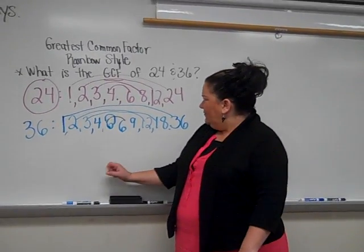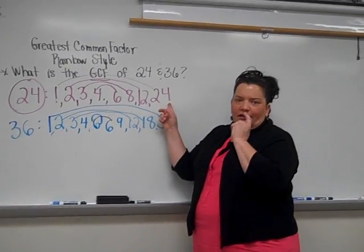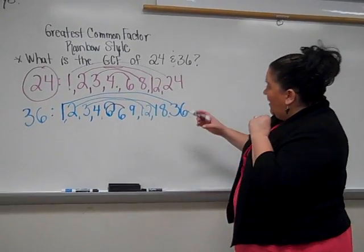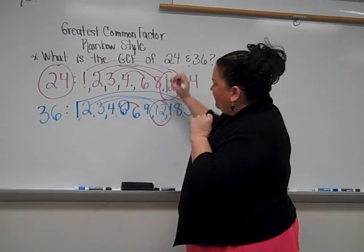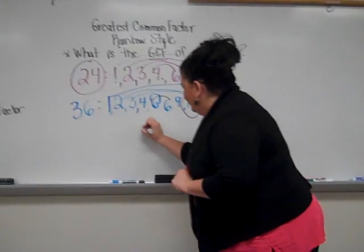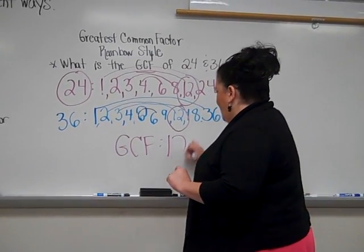Amarion? 18. I don't see 18 up here though. Can you give me a second guess? 12. 12. So our GCF for 24 and 36 would be 12.